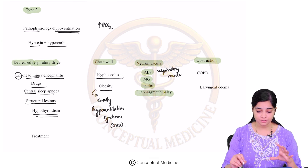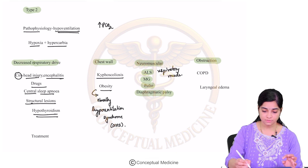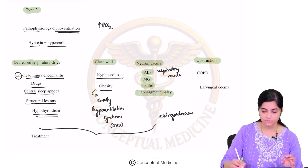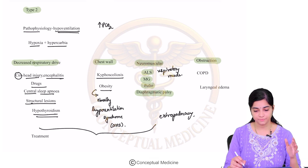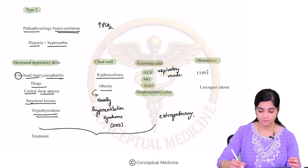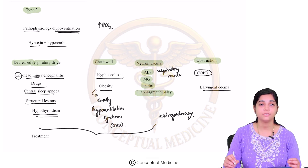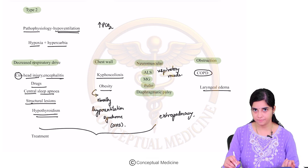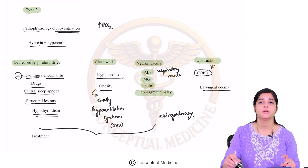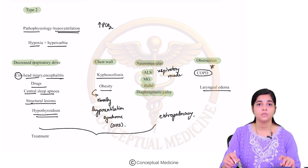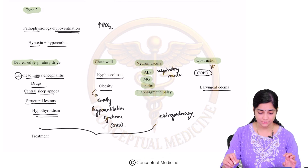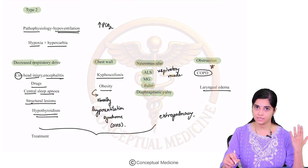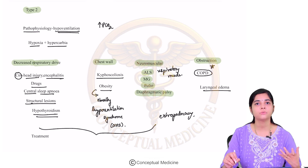Obstruction represents intra-pulmonary causes for PCO2 retention, whereas the previously discussed causes are extra-pulmonary. The most common cause of increased carbon dioxide retention is COPD. Laryngeal edema, foreign body, severe asthma can also cause PCO2 retention. Whenever a patient presents with PCO2 retention, think of the four major causes — pulmonary versus extra-pulmonary. Under extra-pulmonary: CNS causes, chest wall abnormalities, and neuromuscular abnormalities.